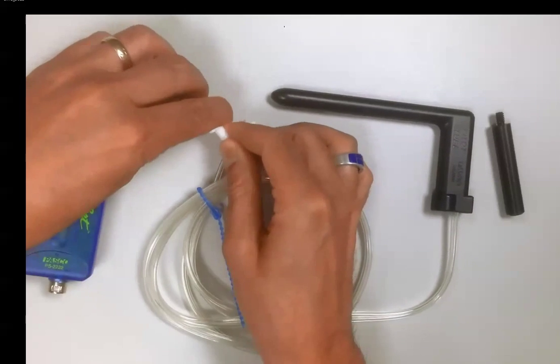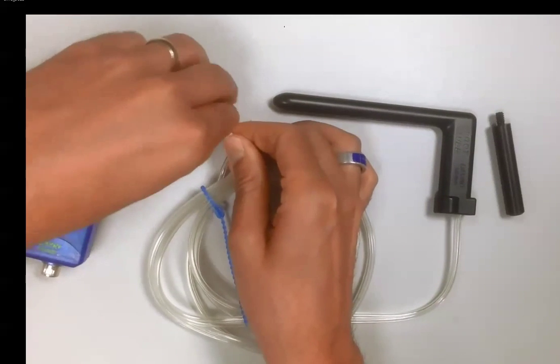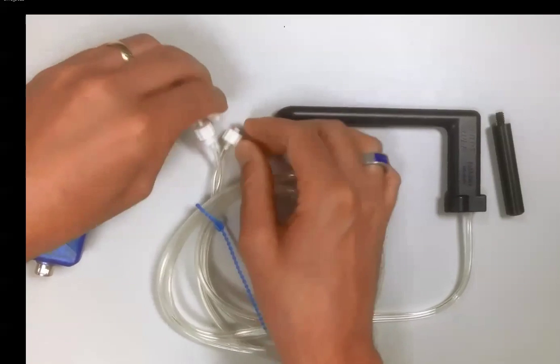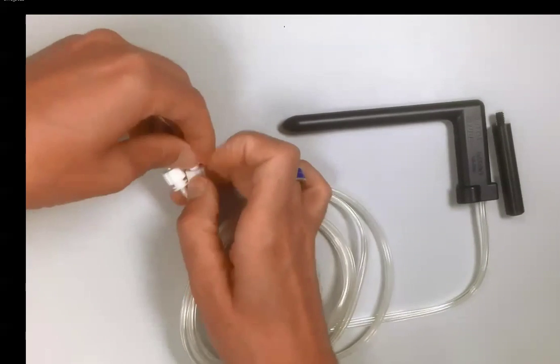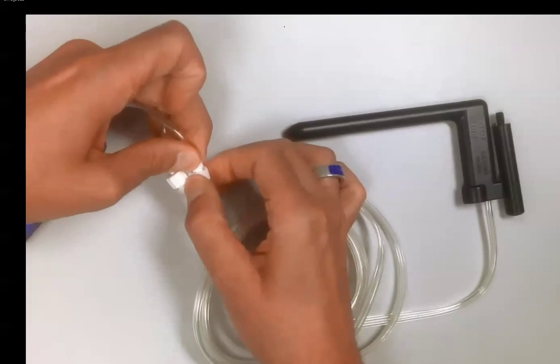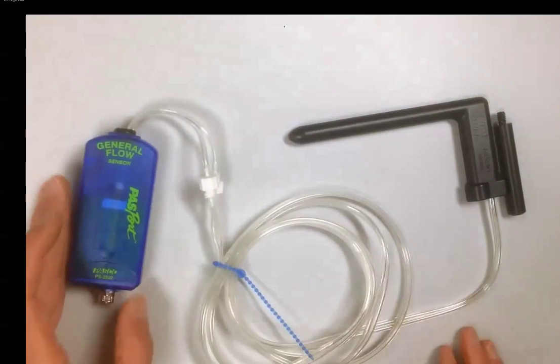If you are going to be using this for open channel flows for water, please make sure that you have these pressure connectors connected prior to putting the pitot tube in the flow field to prevent water from moving up into the tubing.